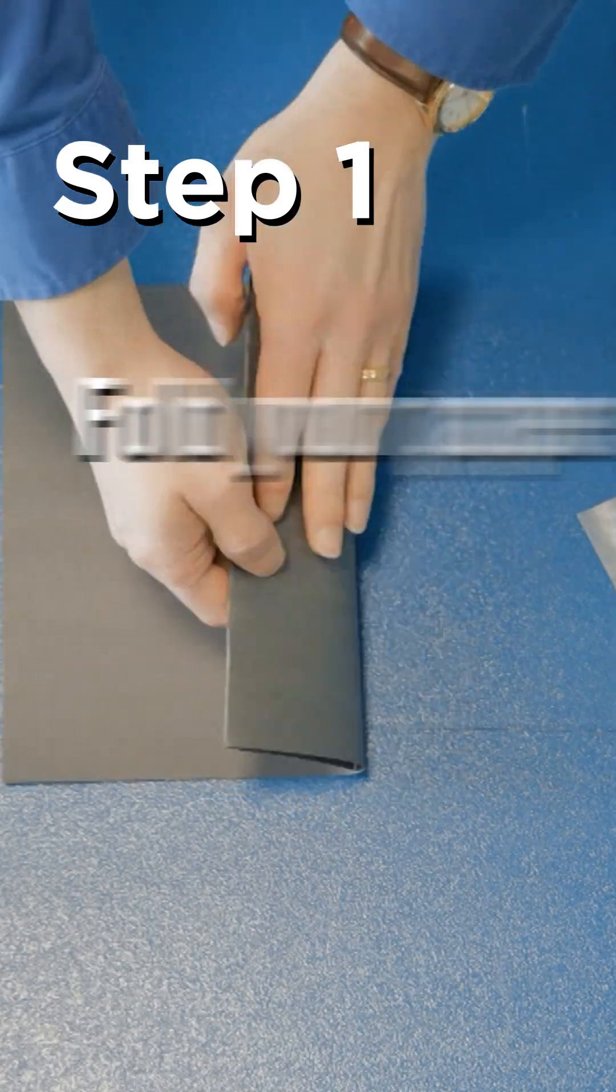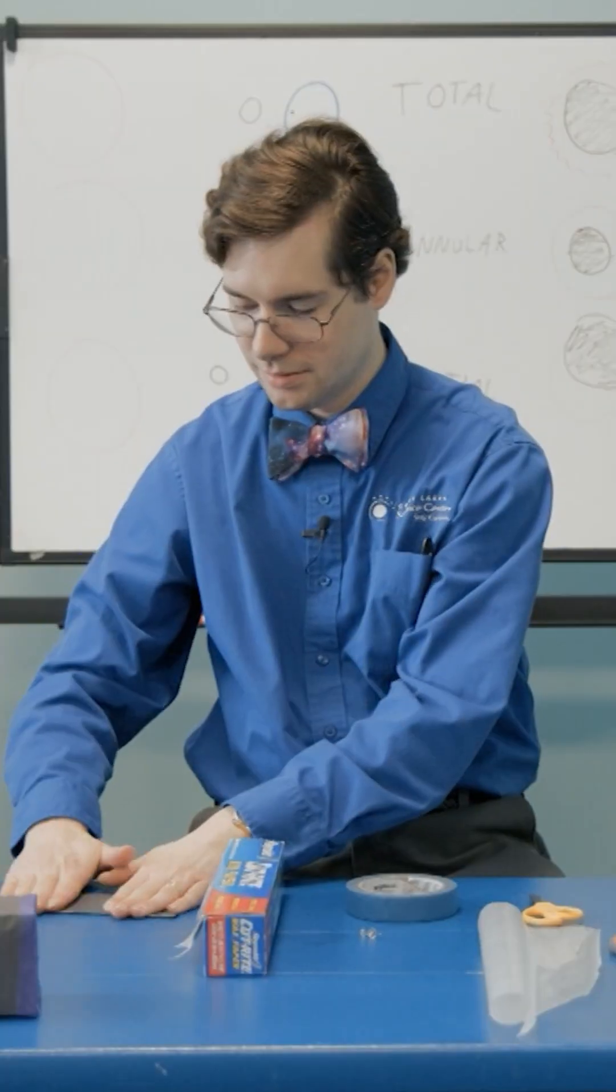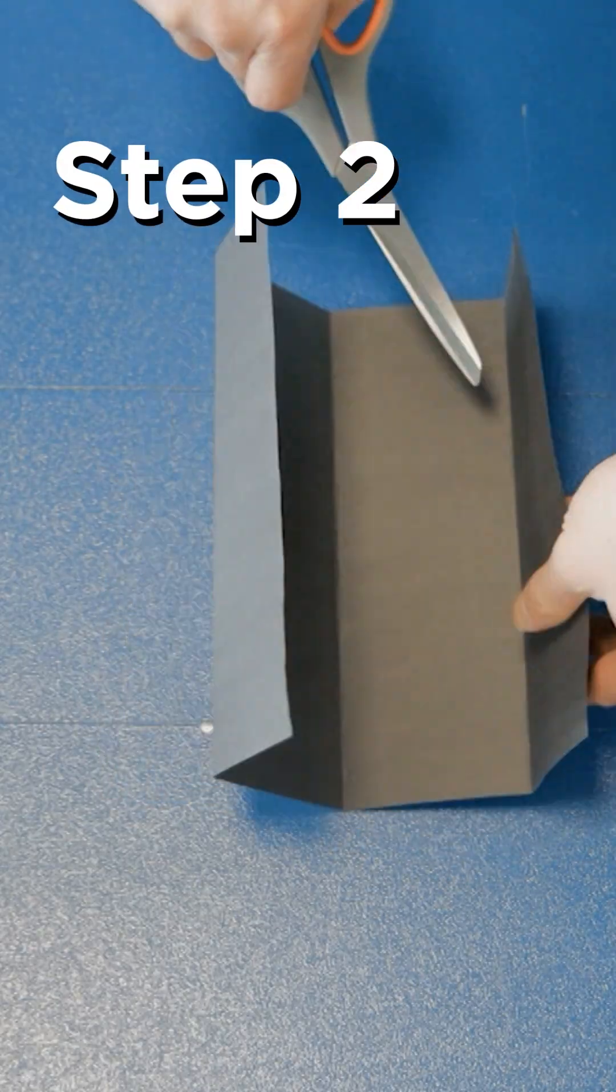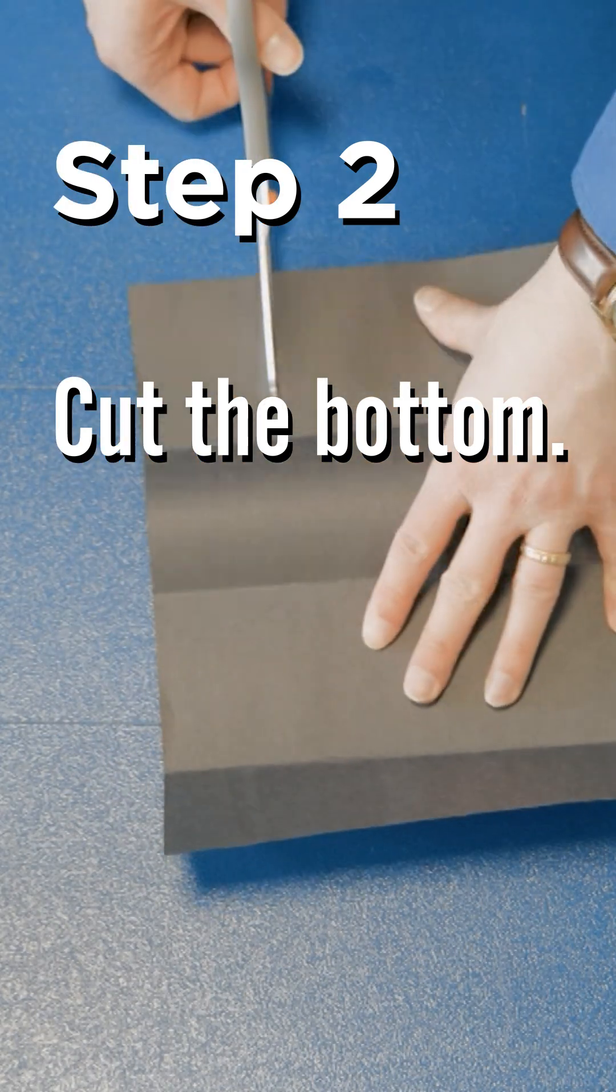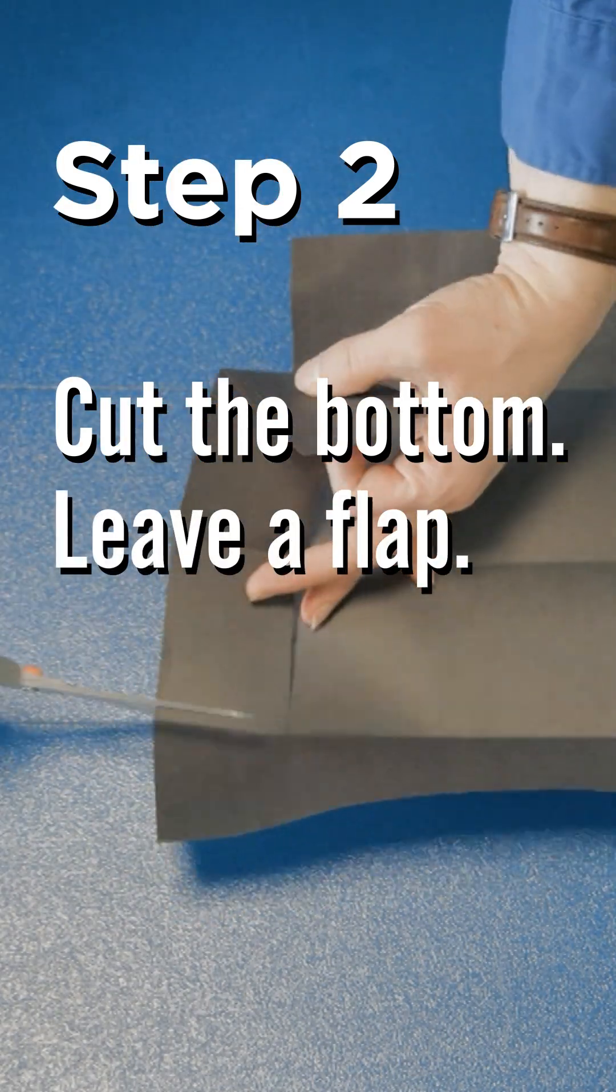Step one is to take your paper and fold it into quarters. Now I'm going to cut along the bottom so that there's a flap at one end.